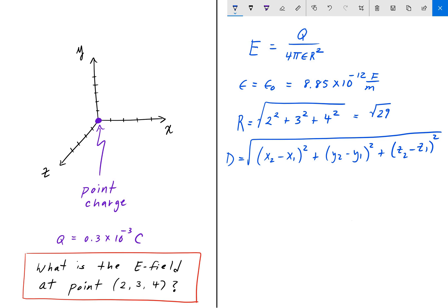And now we can find E as Q, which is 0.3 times 10 to the negative 3 divided by 4π times epsilon, 8.85 times 10 to the negative 12 times the square root of 29 squared, which is just 29.